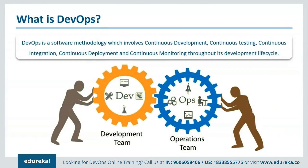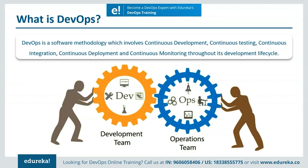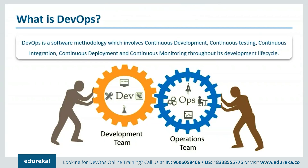Starting with today's session, let me first brief you on DevOps. DevOps is basically a software development strategy which bridges the gap between the dev side and the ops side of the company. In simple words, DevOps is a software methodology which involves all the steps from continuous development, continuous testing, continuous integration, continuous deployment, and continuous monitoring throughout its development lifecycle.